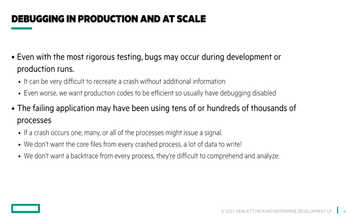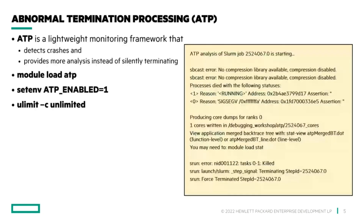We probably don't want 500,000 core dumps created and written to the filesystem, and even if we did, we couldn't analyze that in a scalable way. This is why we really need scalable tools to analyze a crashed application or stop one and work out where it is. You probably don't want to look through 20,000 backtraces to work out why your application is behaving strangely. A better approach is available, and I'll mention a tool called ATP — Abnormal Termination Processing — which you can enable by loading the ATP module and setting the environment variable ATP_ENABLED to 1.